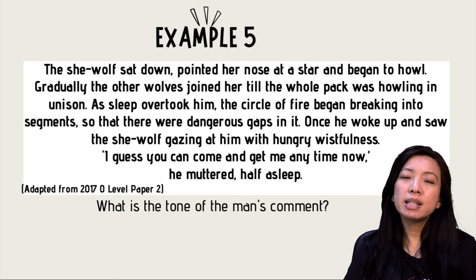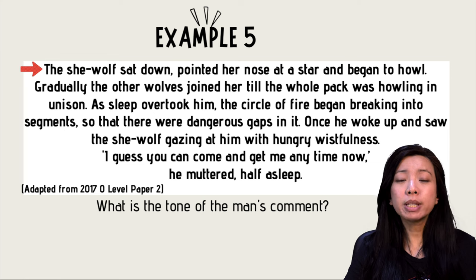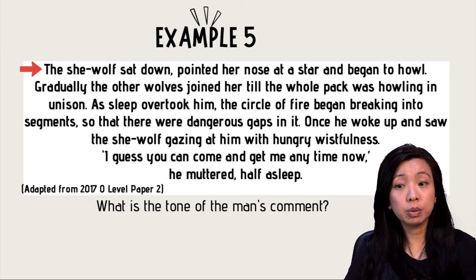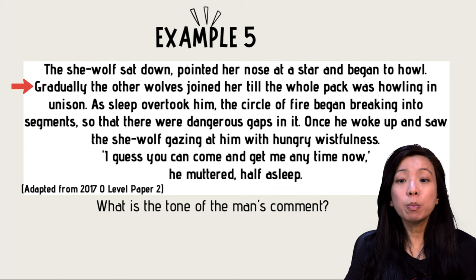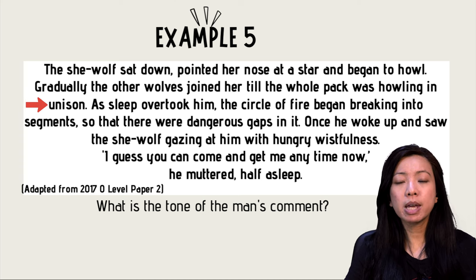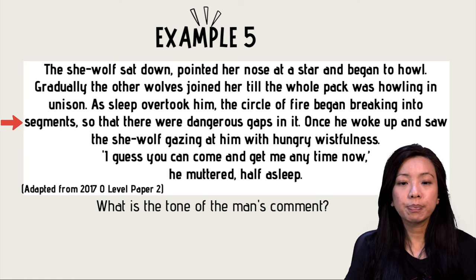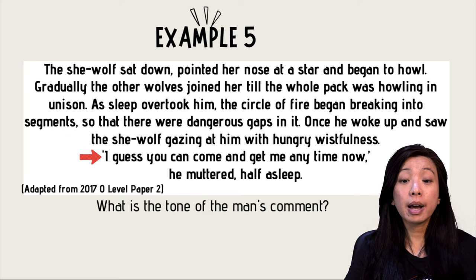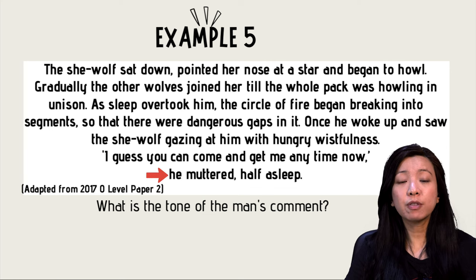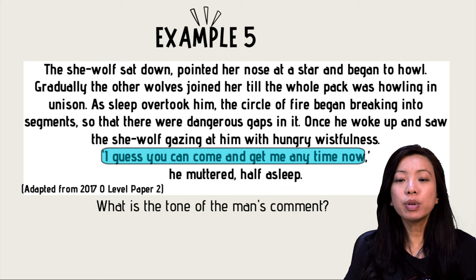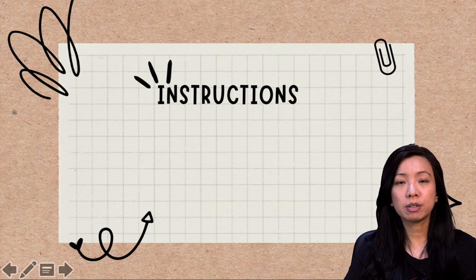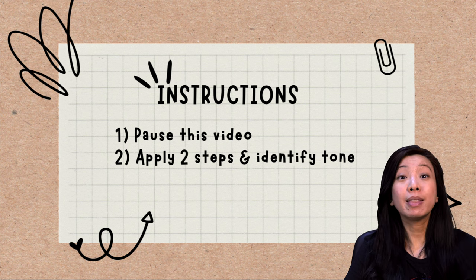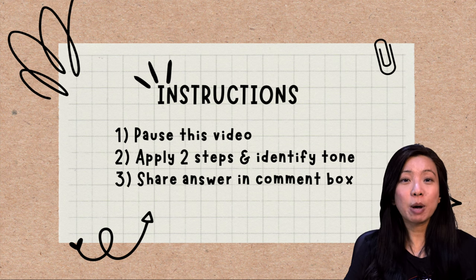This next example is taken from the 2017 O-Level paper. 'The she-wolf sat down, pointed her nose at a star, and began to howl. Gradually, the other wolves joined her till the whole pack was howling in unison. As sleep overtook him, the circle of fire began breaking into segments so that there were dangerous gaps in it. Once, he woke up and saw the she-wolf gazing at him with hungry wistfulness. I guess you can come and get me at any time now, he muttered, half asleep.' What is the tone of the man's comment? Pause the video and use steps one and two to identify the tone.